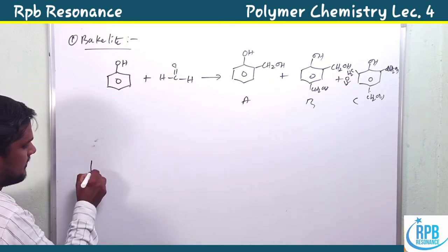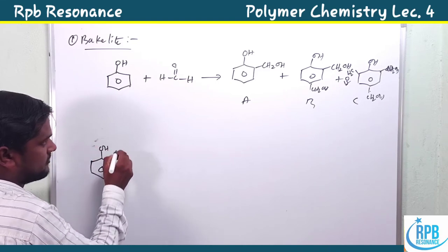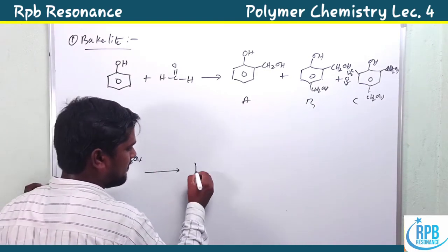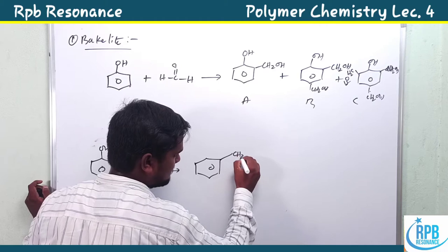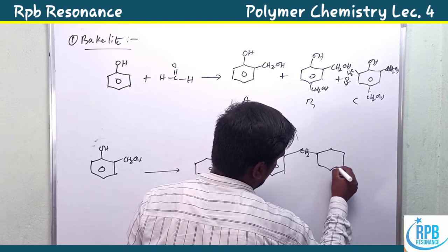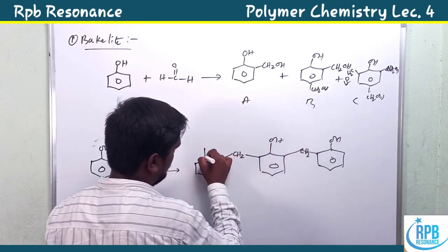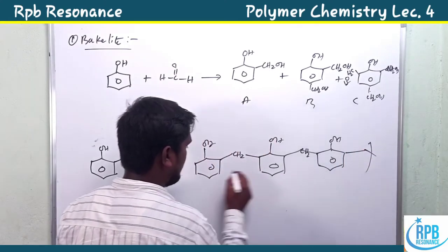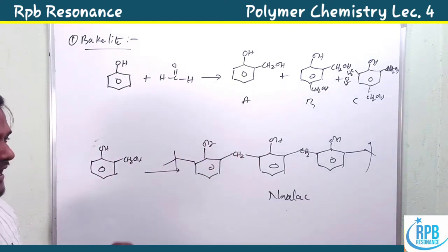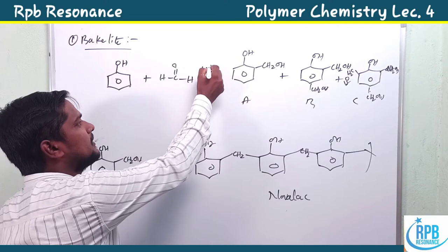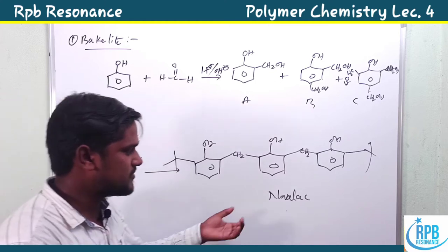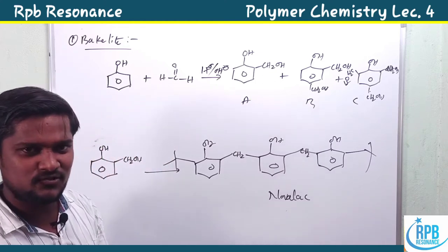These substituted products can undergo linear polymerization, producing a linear chain polymer with repeating OH and CH2OH groups. This linear chain polymer is simply called novolac. Novolac forms in either acidic or basic medium, and it is used in paints before going on to form bakelite.